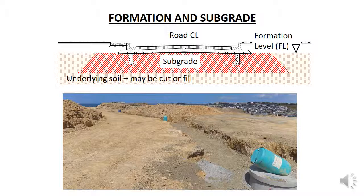The subgrade is compacted to make it stronger and better able to support the road. It is also shaped to match the shape of the final road. Note that the subgrade surface has the same camber as the road so subsurface water will flow away from the part of the subgrade supporting the road. Ponded water in the subgrade can result in it becoming saturated and losing strength. Having the subgrade sloping at the same camber as the road means that the subbase and base course are a constant thickness across the whole width of the road, which makes it easier to lay and compact.